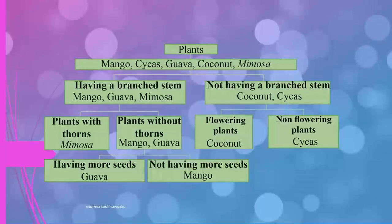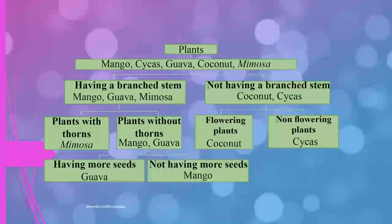Coconut and seekers do not have a branch stem. Then mango, guava, and mimosa are divided into plants with thorns and plants without thorns. Mimosa has thorns; mango and guava do not. Mango and guava are then divided by having more seeds — guava has more seeds, while mango does not.